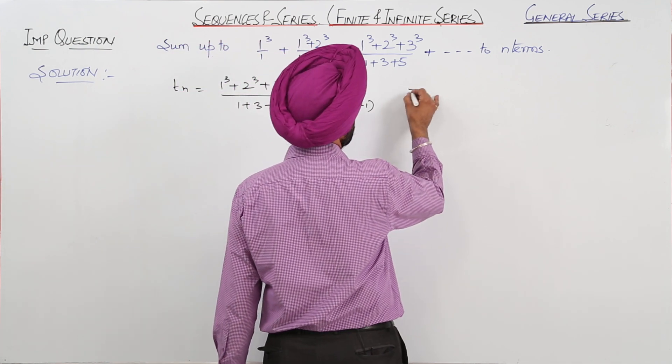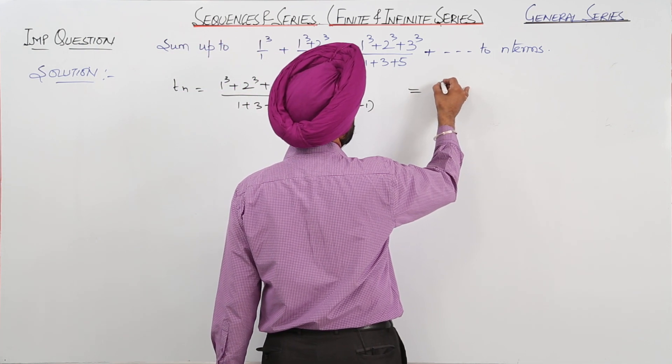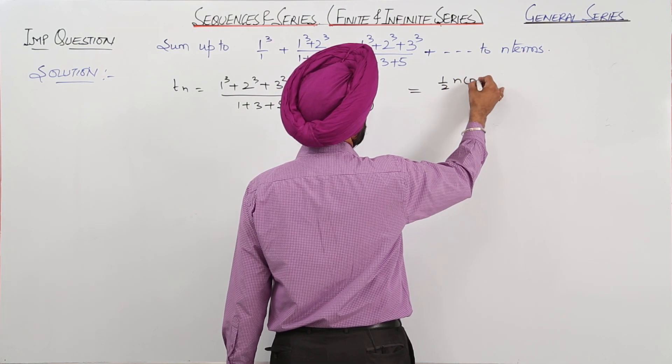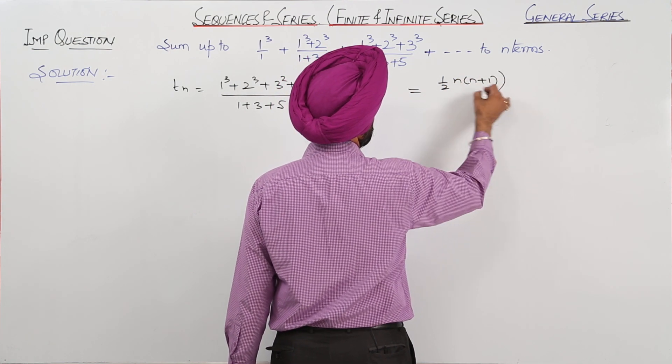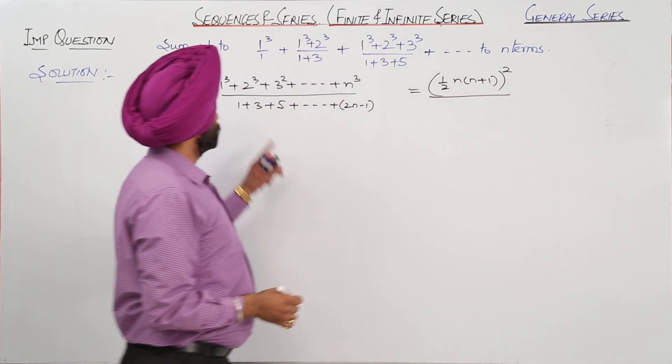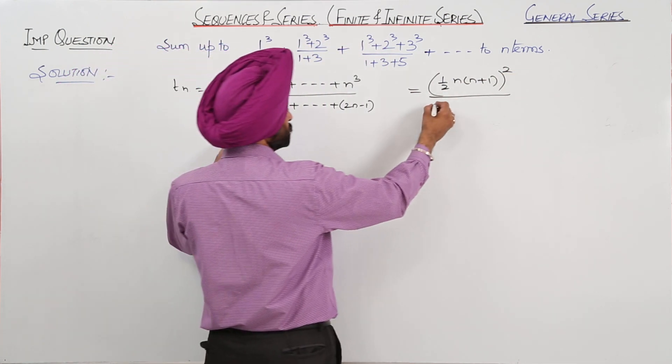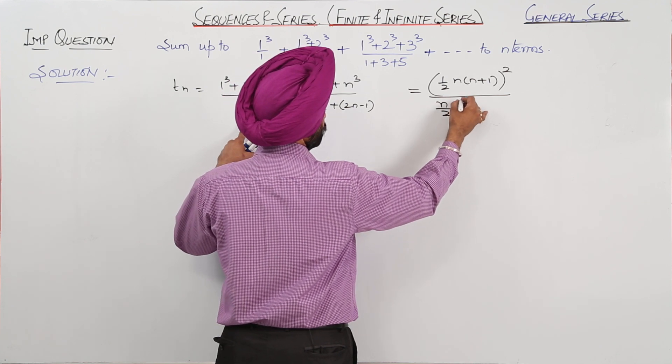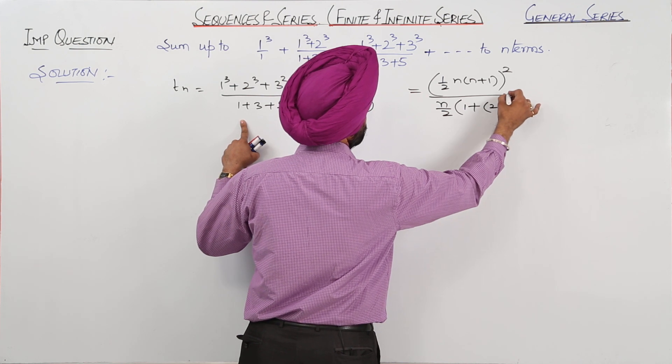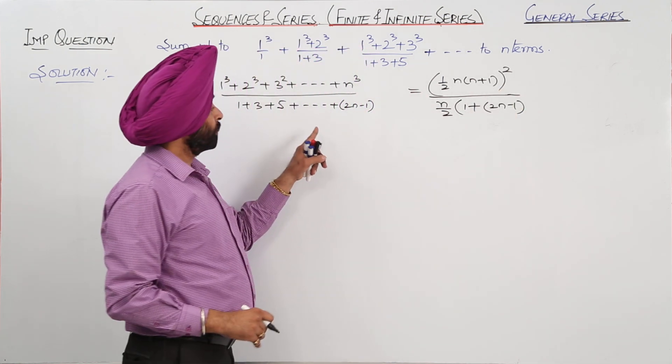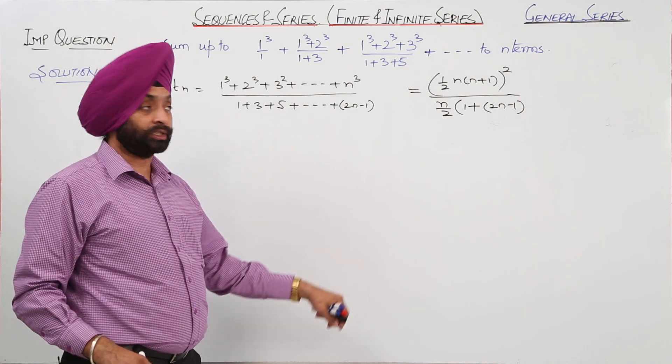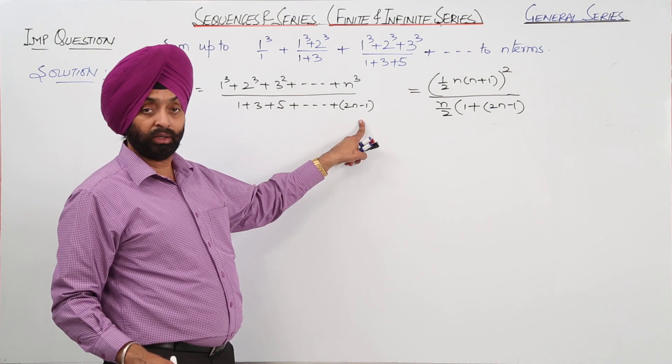Now to this further what we can write? This can be written as 1/2 n(n+1)² upon... for this series the summation will be n/2(1 + 2n - 1). I have used here n/2 in the bracket then a plus l, a is 1, l is 2n - 1.